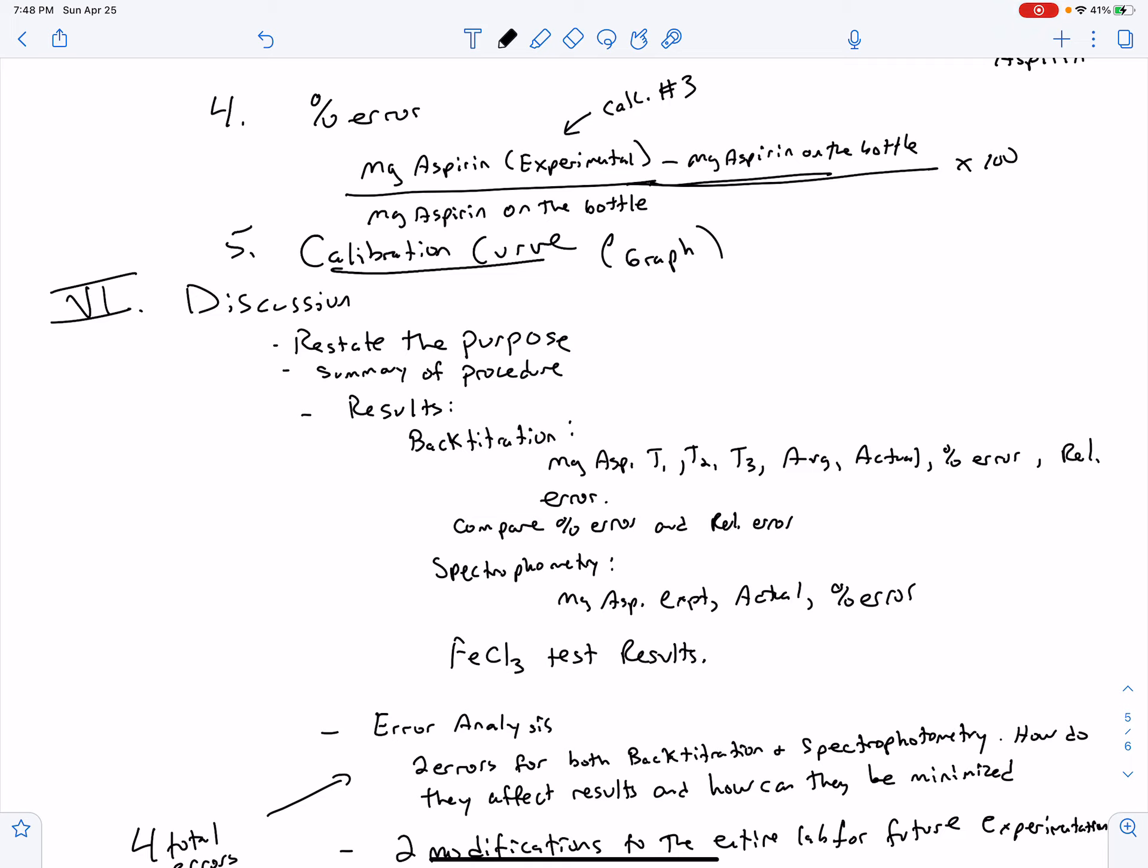Next, you're going to tell me what you got. And so that is the milligrams of aspirin for trial one, two, three, the average actual percent error, relative error, and comparing the percent error to the relative error for your back titration. For your spectrophotometry, your milligrams of aspirin, experimental, actual, and your percent error. No plus minus values that we're using with these. Tell me the results of the ferric chloride purity test.